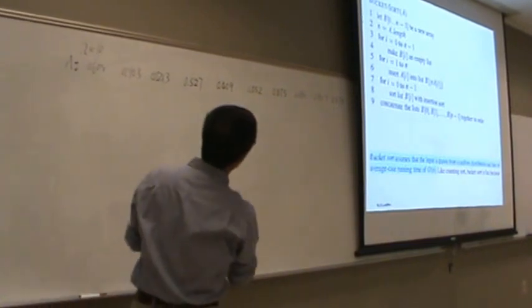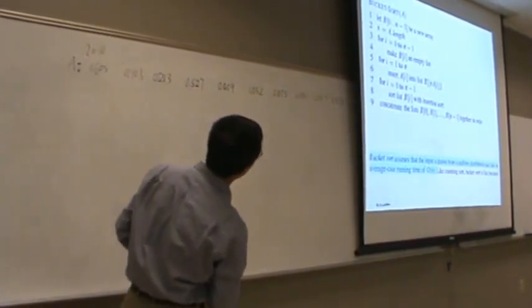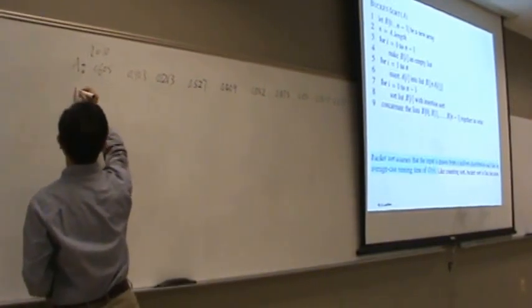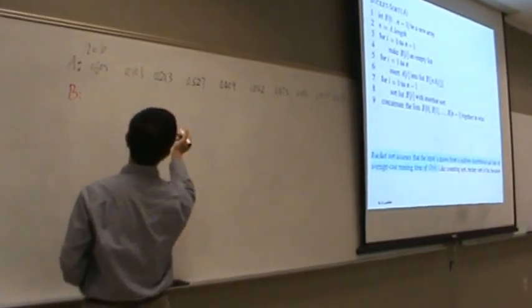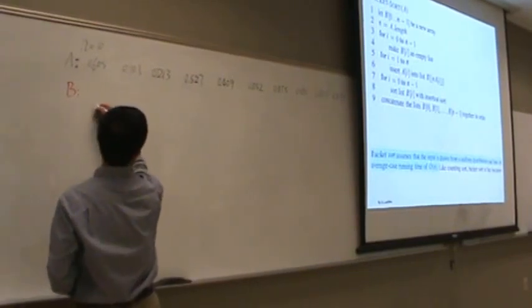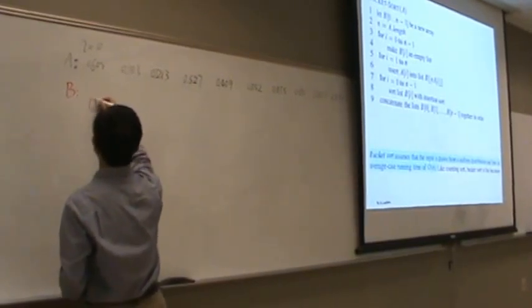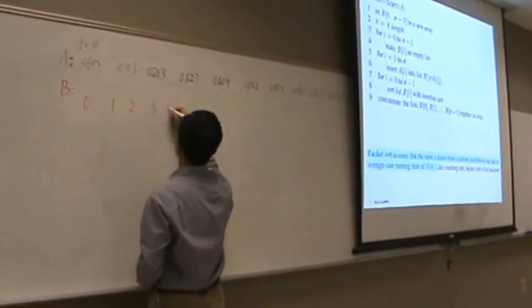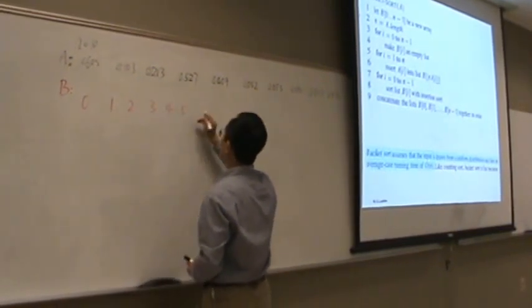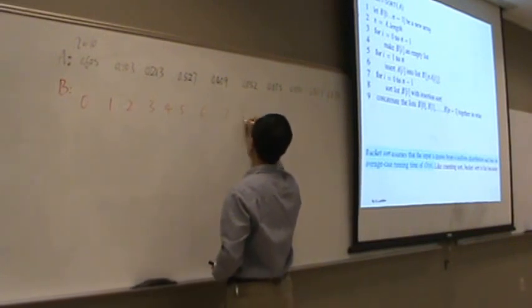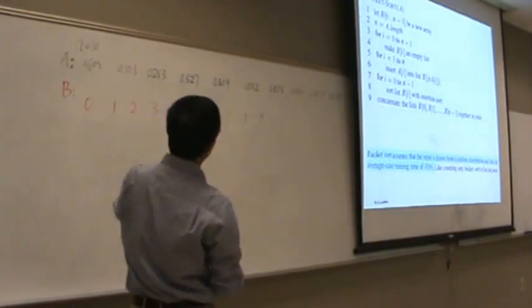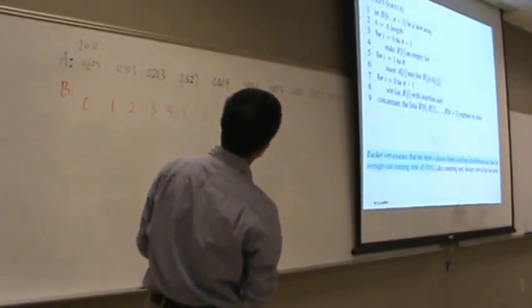Then I'm going to make 10 buckets of B. So again from 0 to, that's correct, 1, 2, 3, 4, 5, 6, 7, 8, 9. And those are all empty lists.